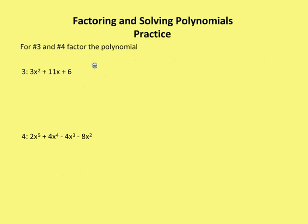For number three and four, I'm going to factor the polynomial. So here I have my general trinomial, 3x squared plus 11x plus 6. I'm going to use my diamond in box process to solve. I see that 3x squared or three is not a perfect square, six is not a perfect square. So I'm not looking at a perfect square trinomial.